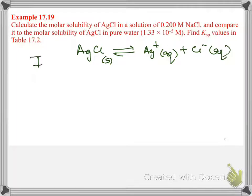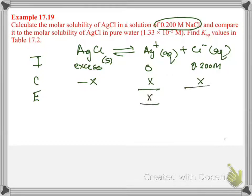We'll make the ICE. And initially, it's in excess. There is no silver ion. But since 0.200 molar sodium chloride is also added, which means I have 0.200 molar initially chloride ions. Now, X, X, and X. So at equilibrium, we're going to have X and 0.200 plus X.